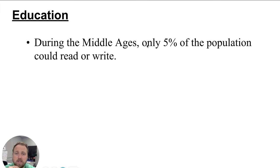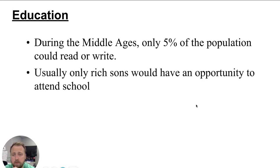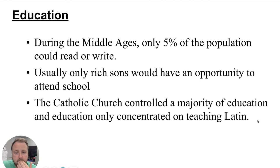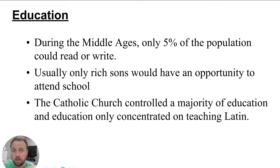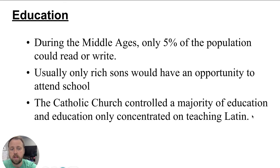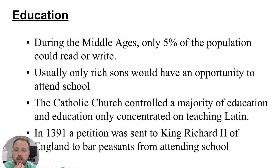During the Middle Ages, only five percent of the population could read or write — today it's the opposite, with 95 percent or more able to read and write. Usually only rich sons had the opportunity to attend school. Serfs did not go to school and had no opportunity to learn to read or acquire information. The Catholic Church controlled the majority of education, and that education only concentrated on teaching Latin — which was not the spoken language of most people.